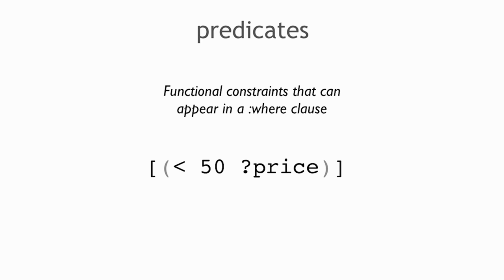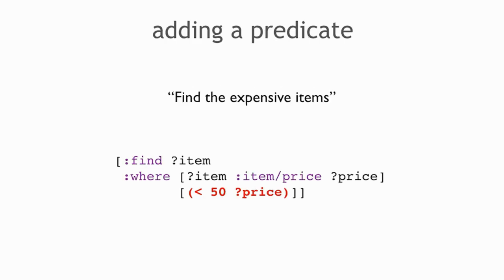You can use predicates — functional constraints that are applied after you already have matches in hand. Once price is already bound, prices will be removed if they don't match the predicate. This says price has to be larger than 50. So we might have had 1,000 bindings of price, some small and some large, and then this filter is imposed, and the small ones won't appear in the final result. So this finds the expensive items: all entities with a price attribute, keep only those where price is greater than 50, and return only the item IDs.